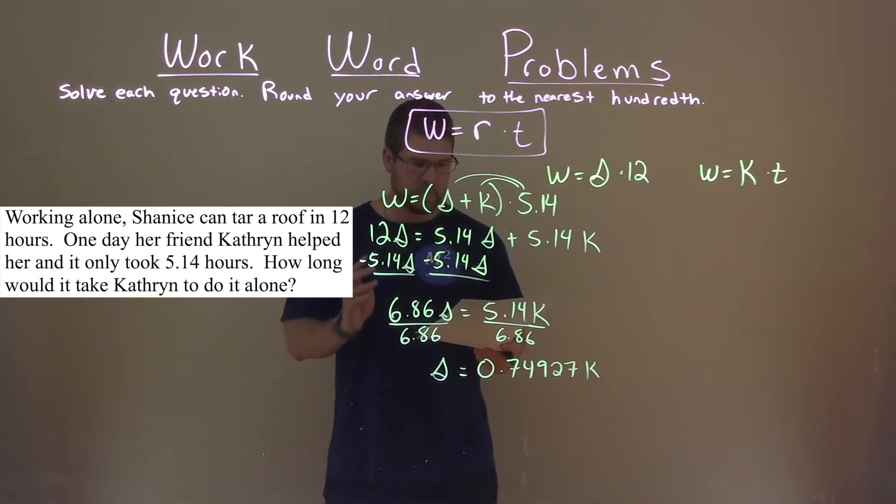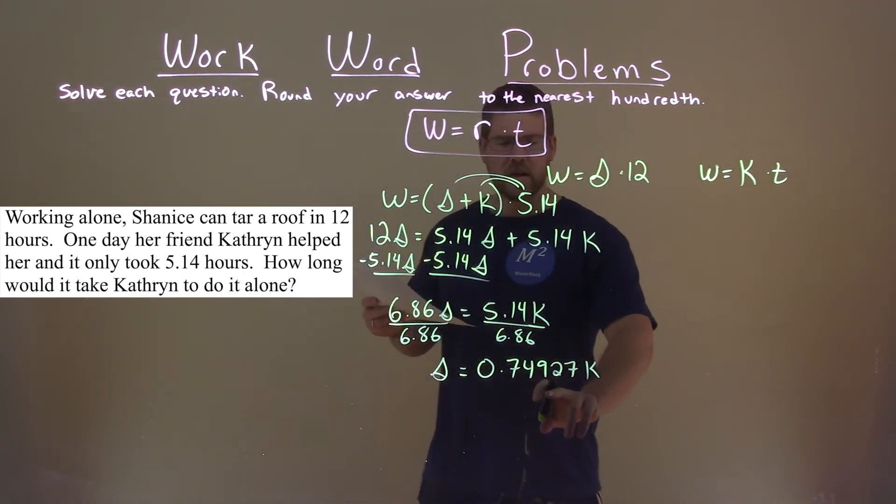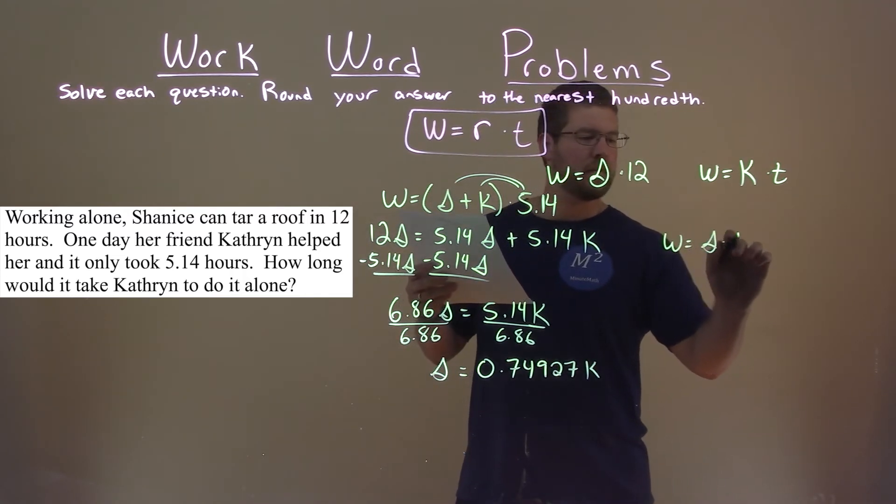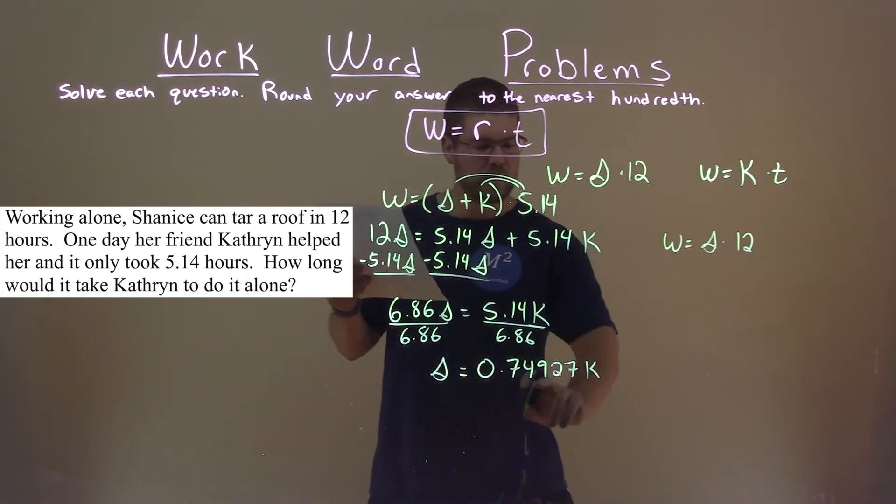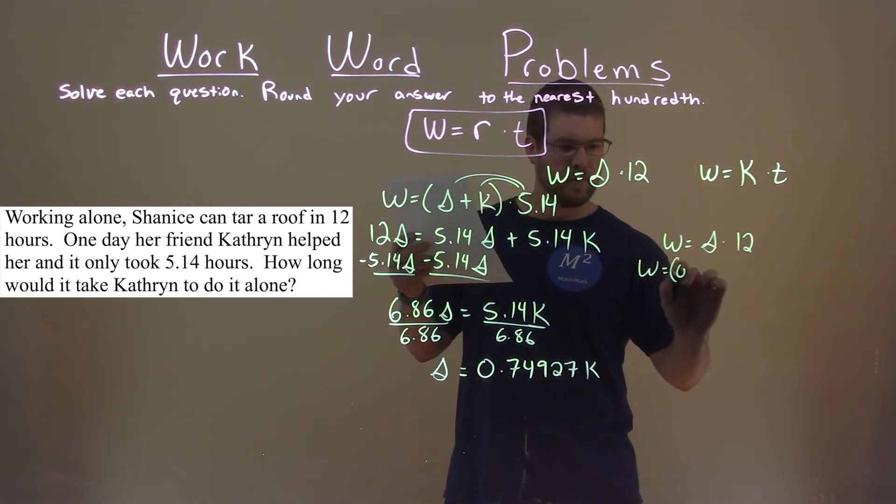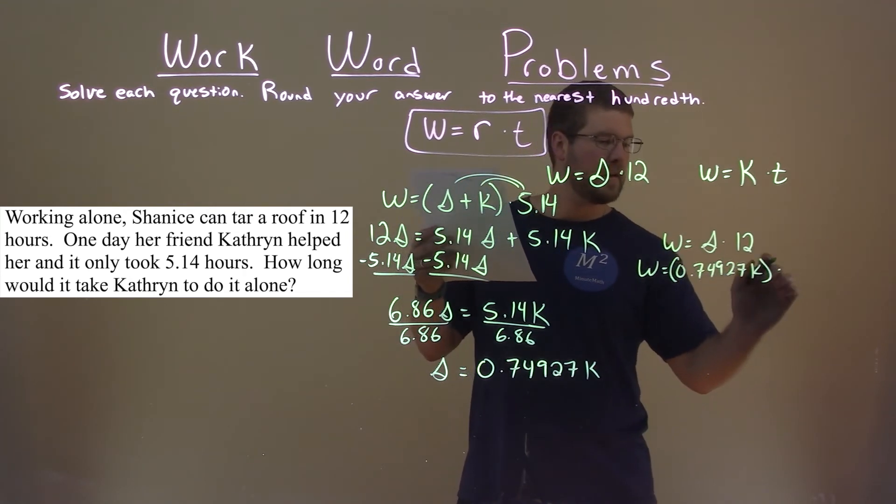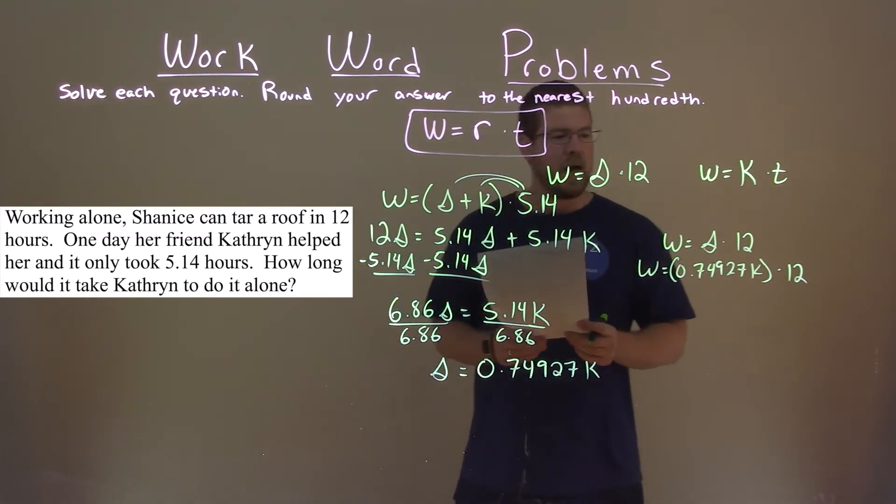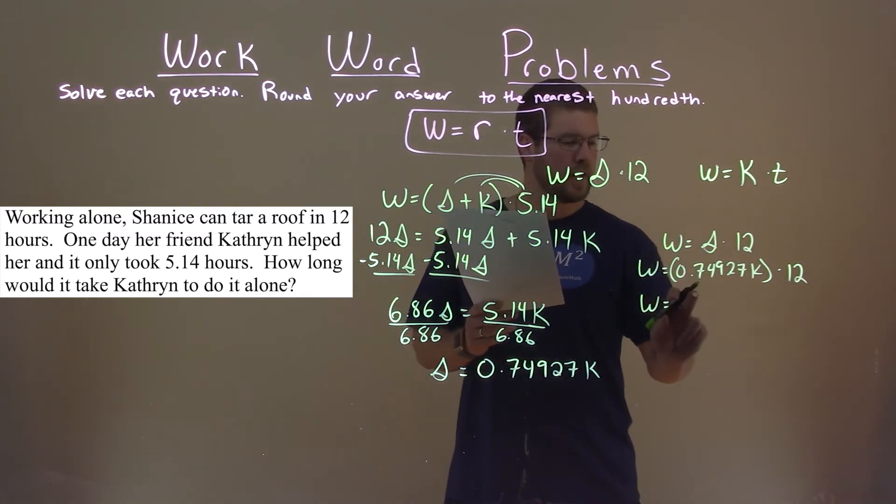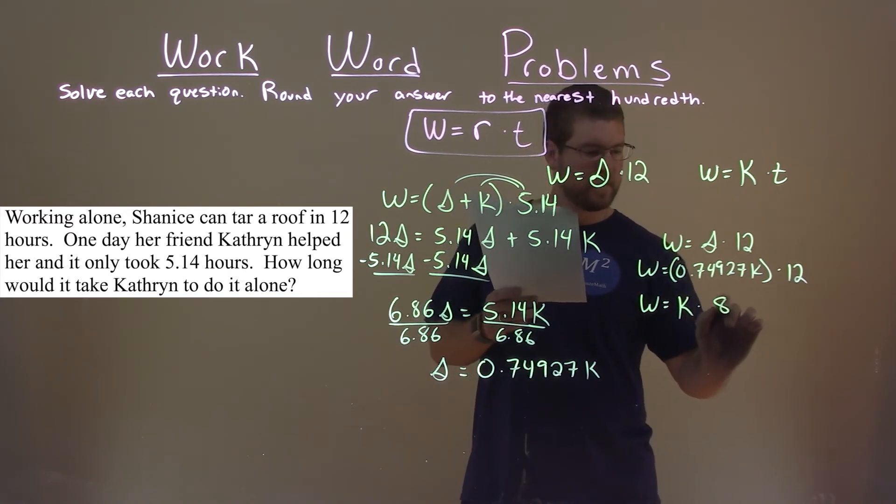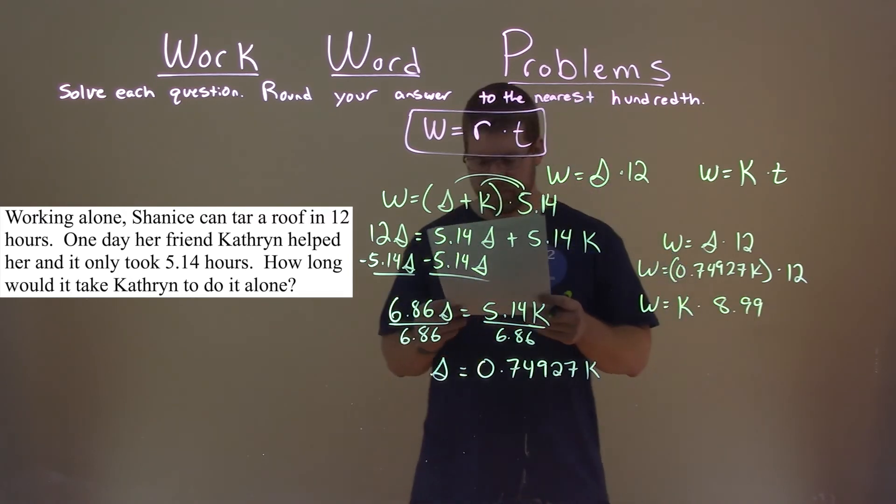So, what do we do with that? Well, let's look at this formula for Shanice. W equals s times 12. I'm going to plug this in for s. 0.74927k times 12. And the work equals, let's take that 0.74927 times 12. And that multiply out comes out to be about 8.99.